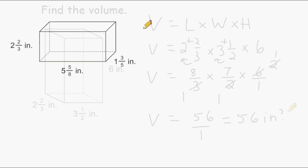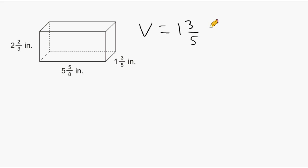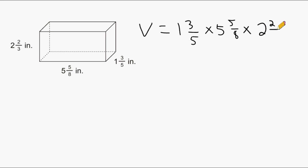Let's try one more example. This time instead of writing the formula, I'm going to plug the numbers into the formula right away. I like to start with the two numbers that represent the dimensions of our base, so I'm going to write one and three-fifths first, multiplied by five and five-eighths, multiplied by the height, which is two and two-thirds.